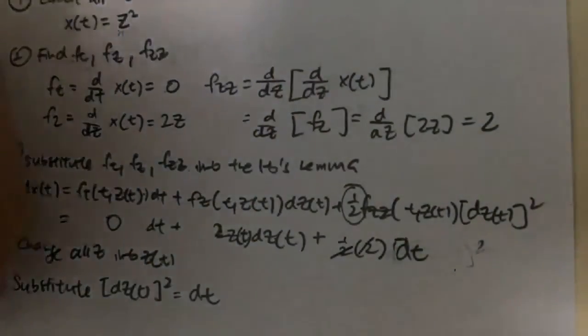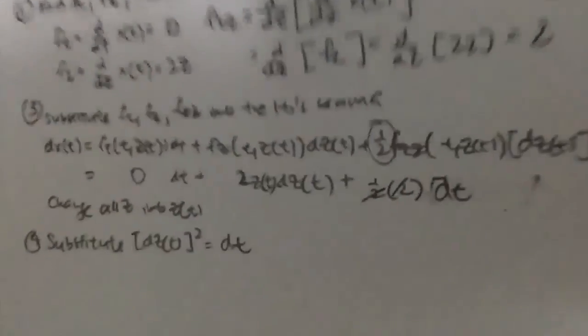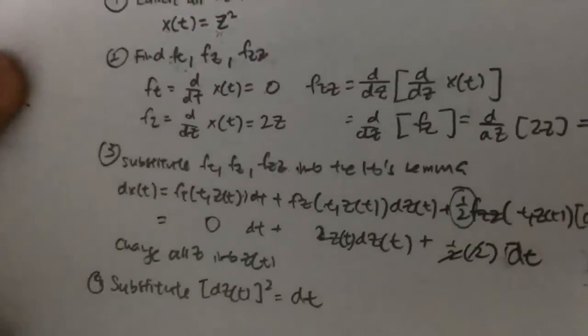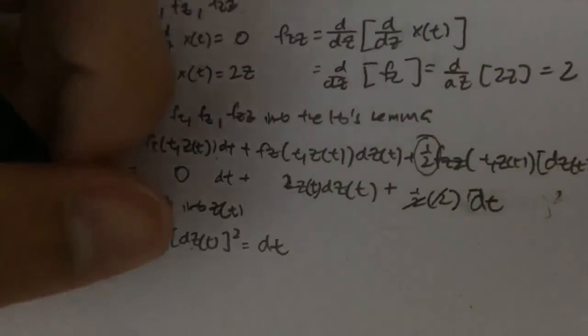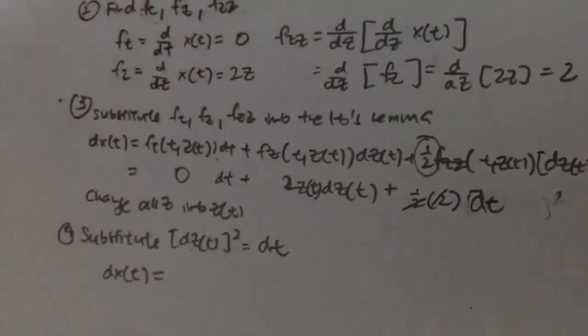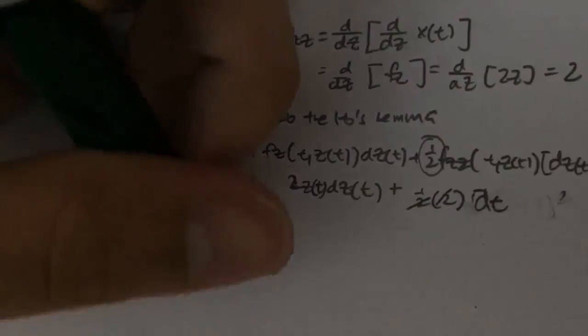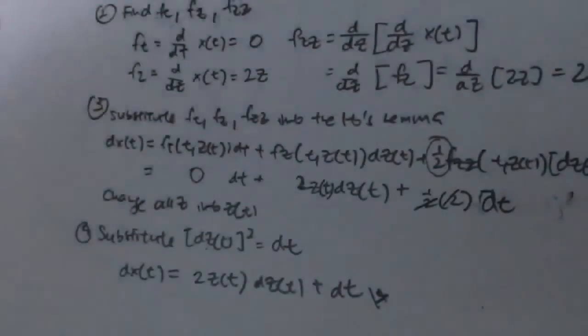And we will cancel, and our final answer for this question, our dX(t), just basically equals to 2Z(t) dZ(t) plus dt. So this is the answer for our Ito's Lemma.